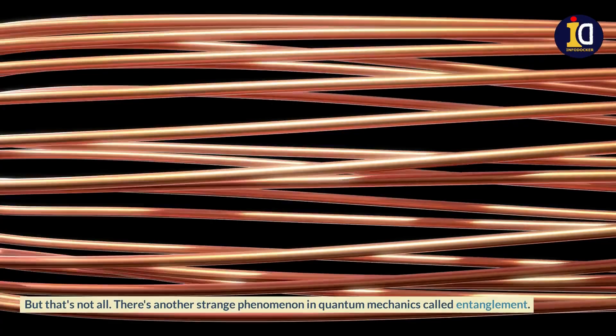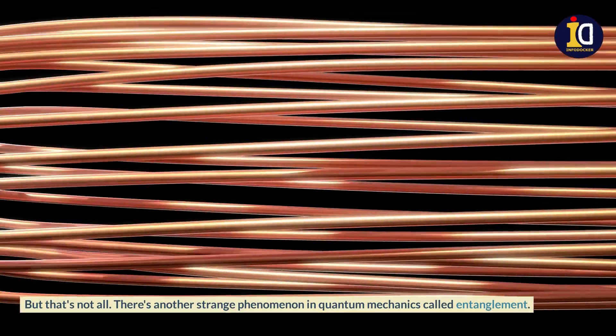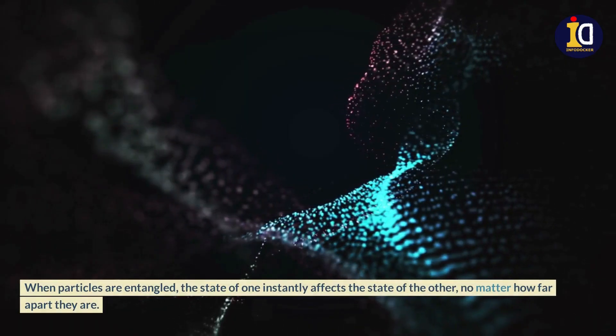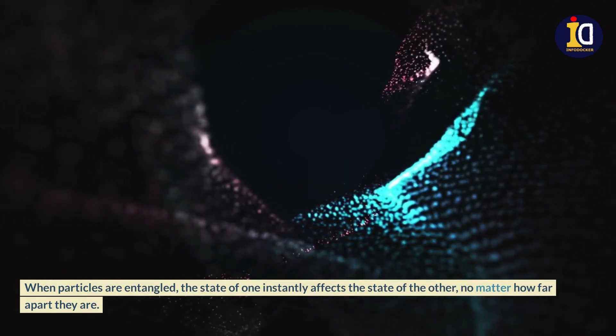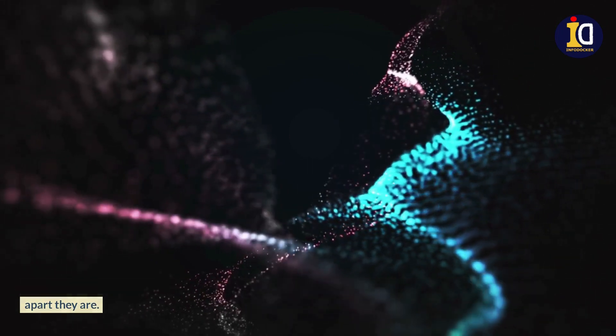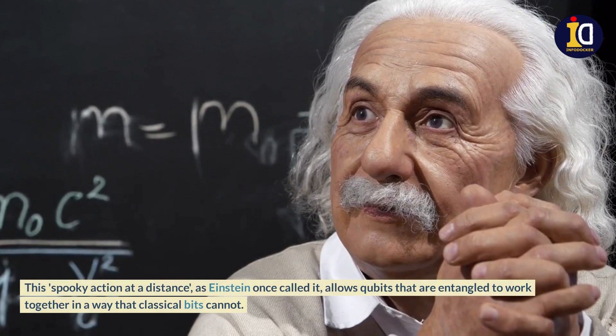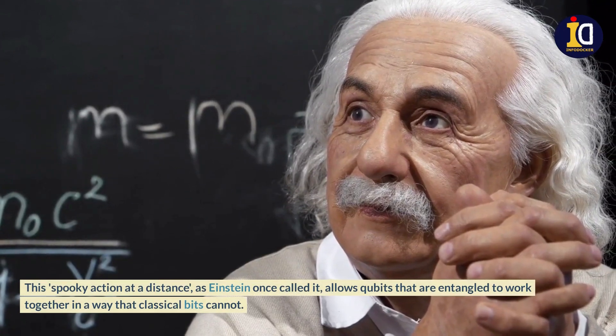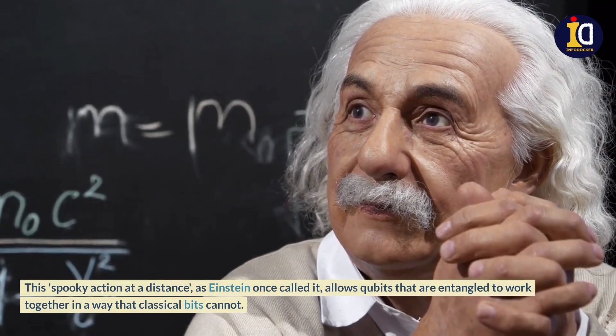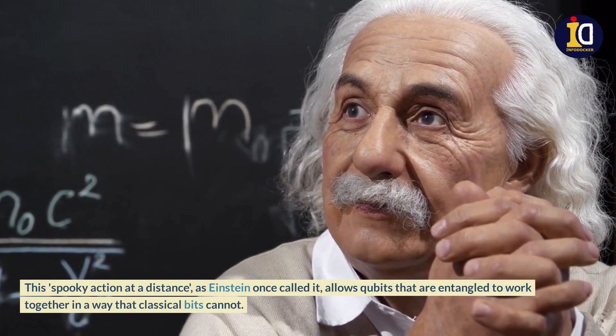There's another strange phenomenon in quantum mechanics called entanglement. When particles are entangled, the state of one instantly affects the state of the other, no matter how far apart they are. This spooky action at a distance, as Einstein once called it, allows qubits that are entangled to work together in a way that classical bits cannot.